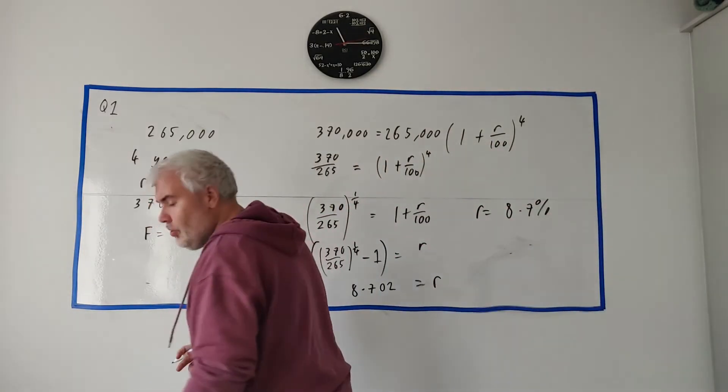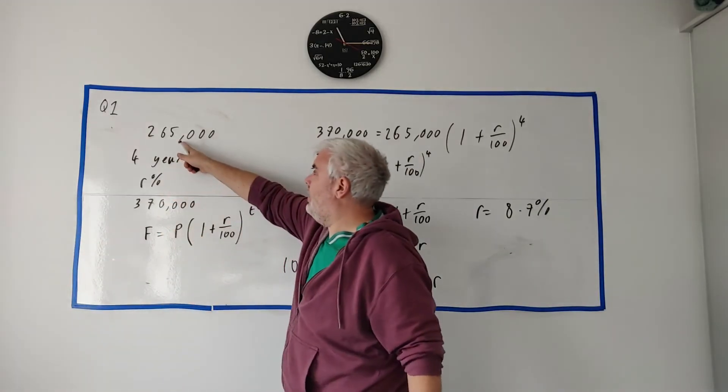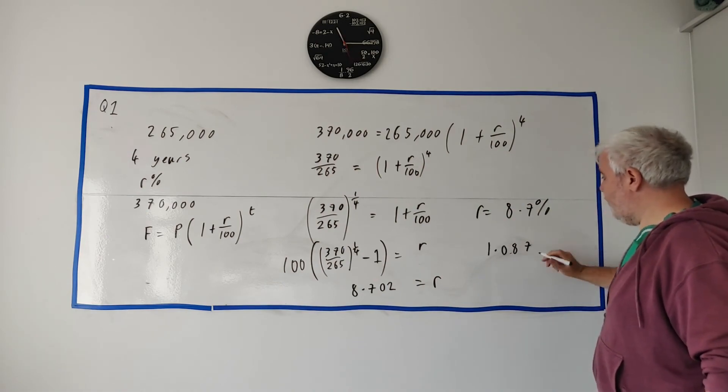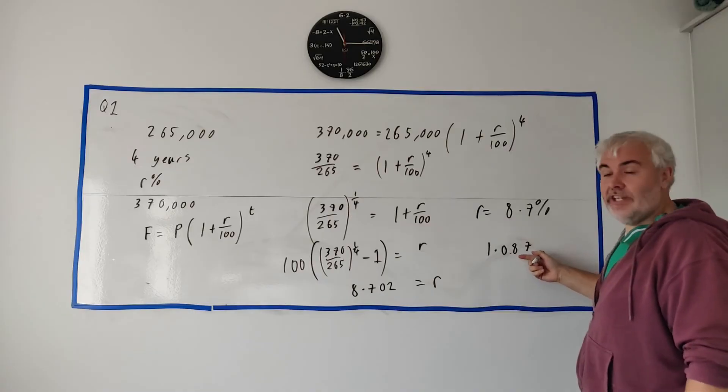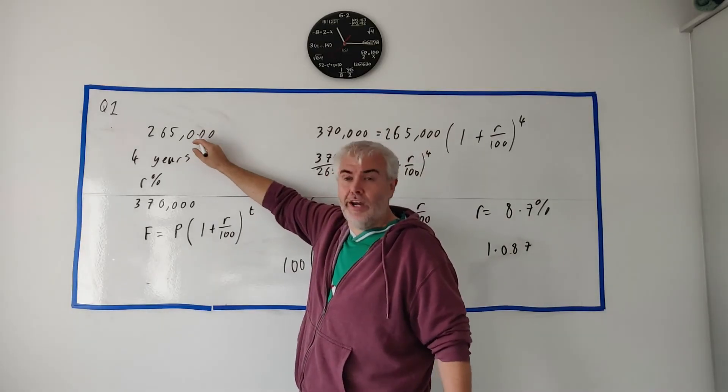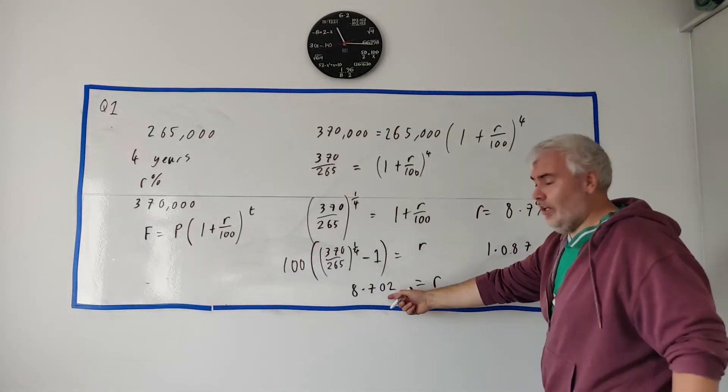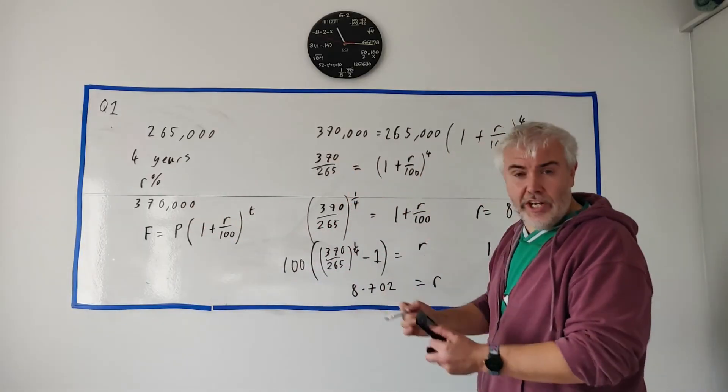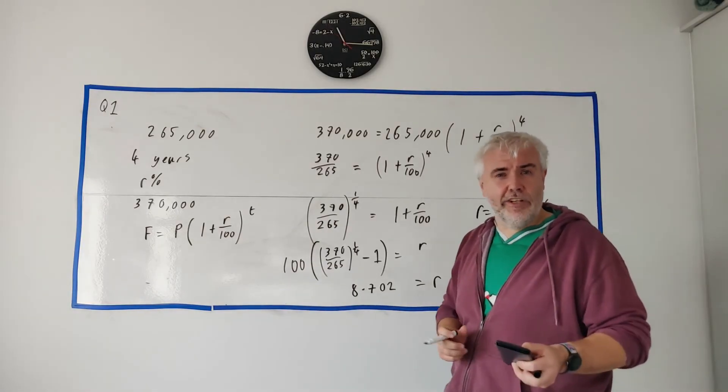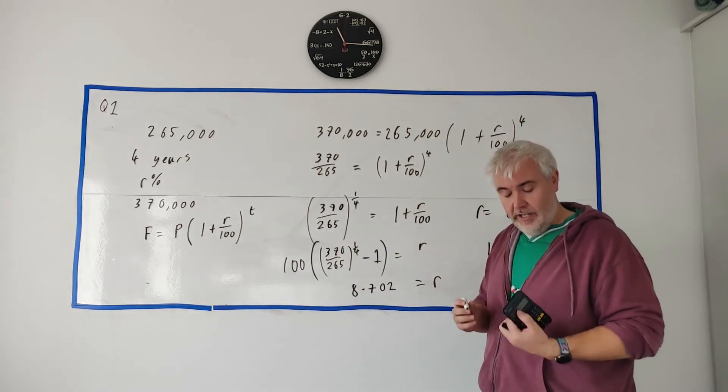Now there's one final thing you can do in this question. You can check your answer and it's very quick to check. Take this number here and multiply it by 1.087. That's what increasing by 8.7% looks like. Multiply this by 1.087 and do it four times. And hopefully you should get this number. It would be off by a little bit because we rounded off here. But double check you're in the right area. This is what you should be doing. You should be checking answers as you go.